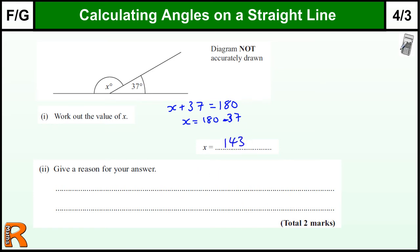You are allowed to use a calculator for this, so do check it on your calculator if you've got one available, and hopefully you won't get it wrong. Give a reason for your answer: angles on a straight line add up to 180 degrees.